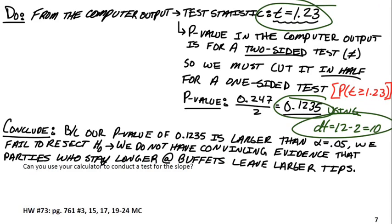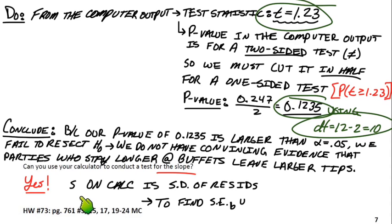Lastly, can you use your calculator to conduct a test for the slope? Yes, you absolutely can. A couple things to note. S on the calculator is the standard deviation of the residuals. And also, if you want to find the standard error of the slope, you can always go back to this formula: t equals the sample slope minus 0 divided by the standard error of beta, or the standard error of b, rather, the sample slope. So, you get the t-score, you have the sample slope, you can just solve for the standard error of beta. So, I think I mentioned this in the last notes, too, but if you run into a problem like this, you can solve for the standard error of the slope that way.